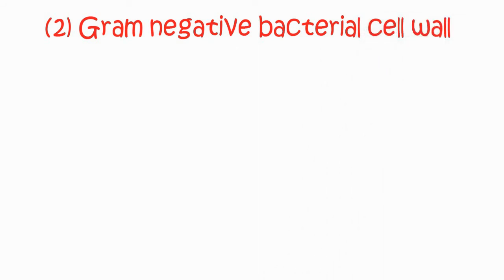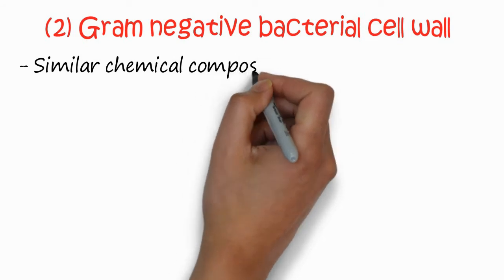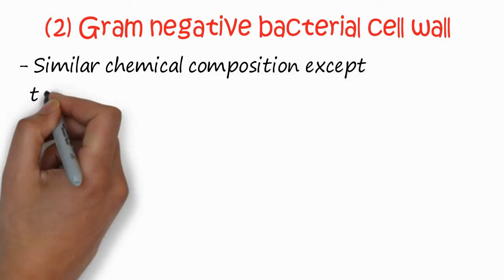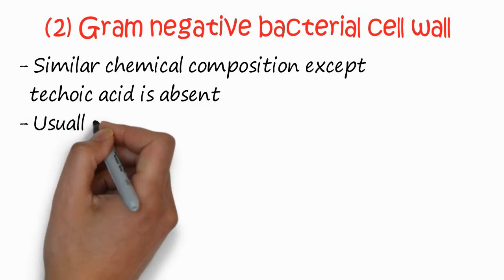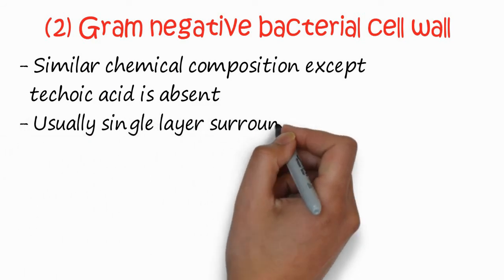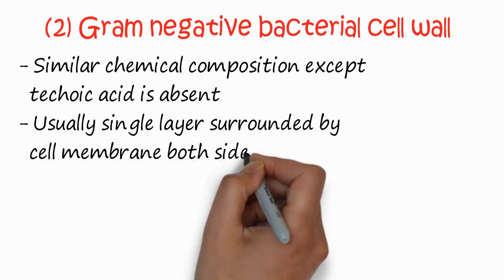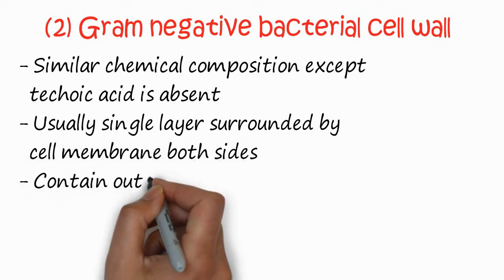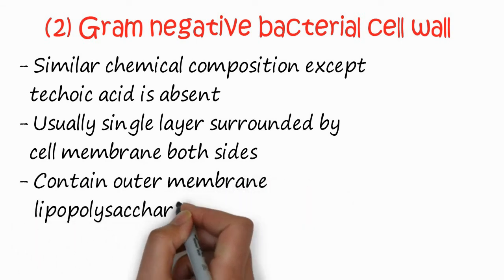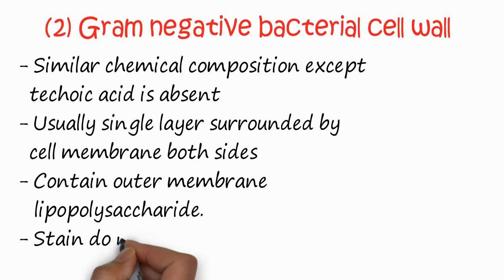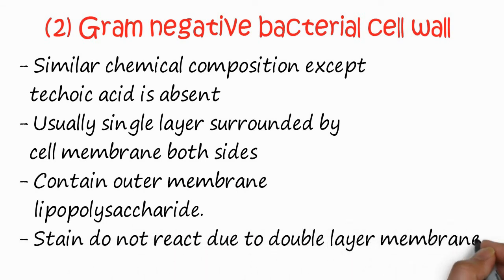The second class of bacterial cell wall is gram negative cell wall. The chemical structure is usually similar to that of the gram positive, but teichoic acid is absent. Usually it is single layer surrounded by cell membrane on both sides. It contains outer membrane and lipopolysaccharides. The stain does not react because of the double layer membrane.